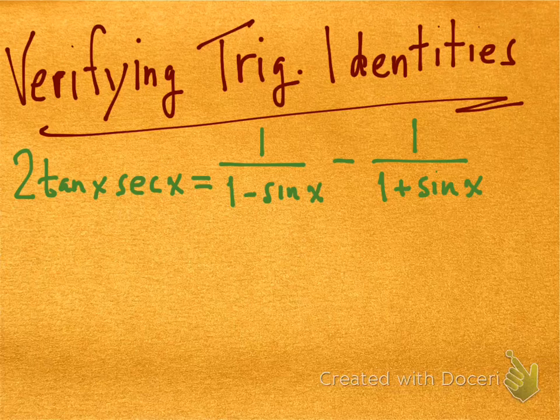And in working with trig identities, we generally pick the side of the equation that's more complicated and try to simplify it down. That's generally easier than working the other way, trying to take a simple expression like 2tan(x)sec(x) and trying to complicate it to look like the other fractions. So we'll take a look at the right side of this equation, these two fractions, and try to simplify them as much as we can.